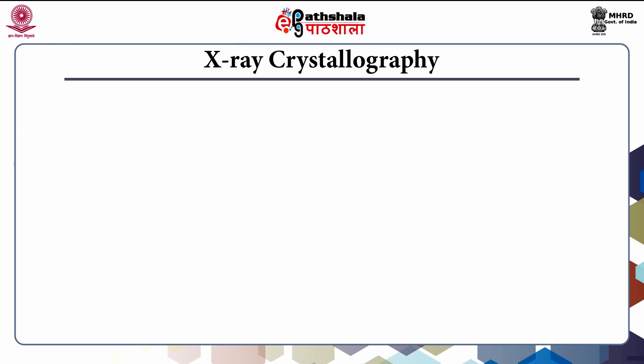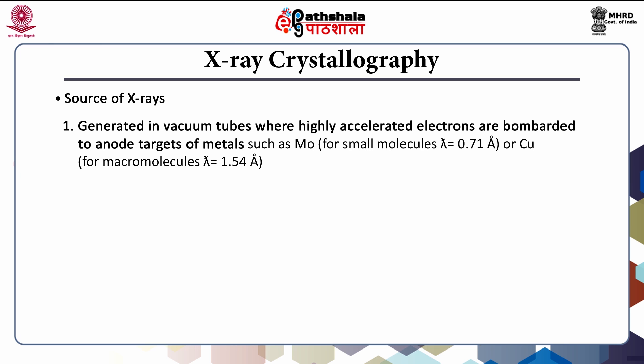Now we are going to discuss the next requirement: the source of X-rays. A beam of X-rays of wavelength 1.54 angstroms is produced by accelerating electrons against a copper target. Generally X-rays are produced by hitting electrons against one particular target — in this case the target is copper. That is one method to produce X-rays.